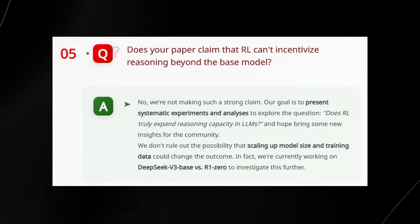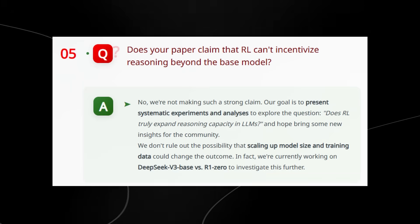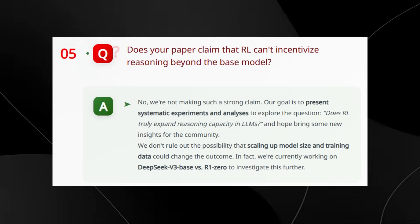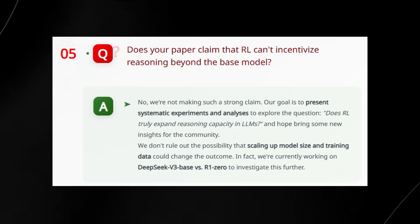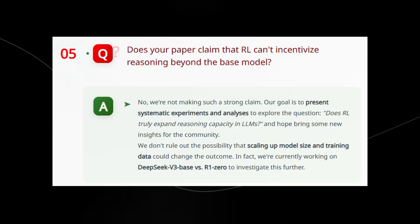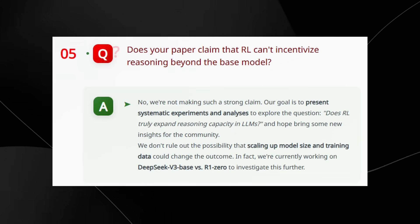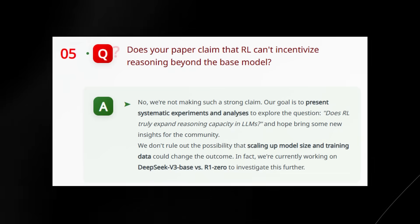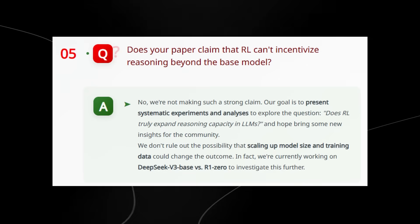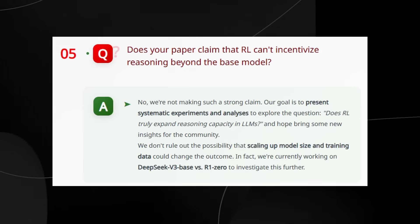And then now they're stating here, does this basically mean that reinforcement learning can't help models reason better than the base version? Not exactly. They're not saying that reinforcement learning is useless, they're saying that so far they haven't seen proof that it makes models smarter at reasoning. And they're saying that they're careful running experiments to ask, does reinforcement learning really help the models learn new ways to think? And so far it looks like reinforcement learning helps models answer faster, but might not be better than what the base model already knew. They are still open to this—maybe bigger models and more data could change that, and they're testing that right now with DeepSeek V3 versus R1. So that's going to be a really interesting thing where the base model of DeepSeek versus the reinforcement learning one, they're going to see how much smarter it is.